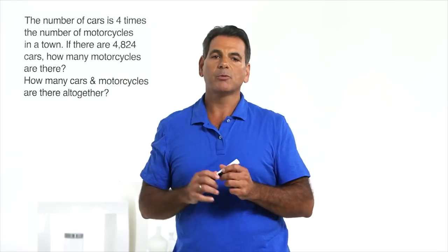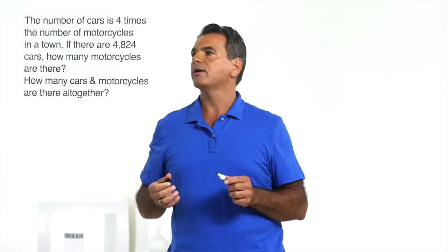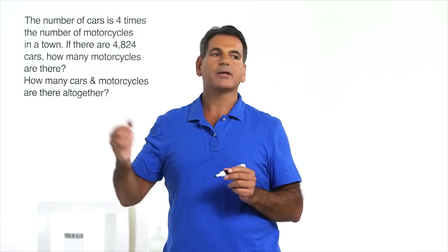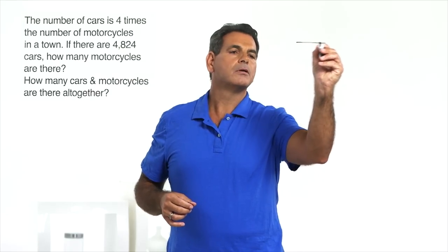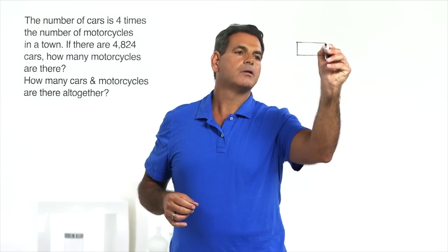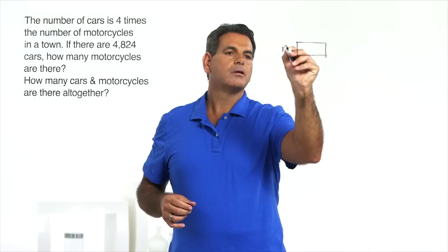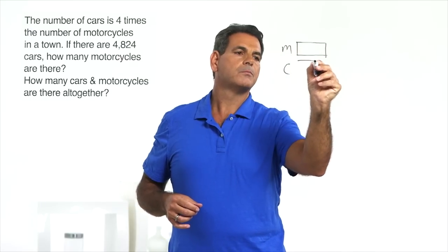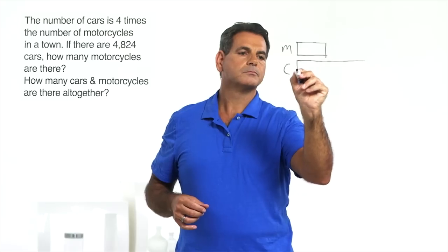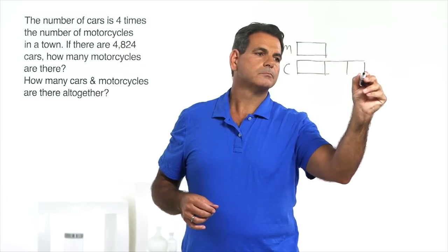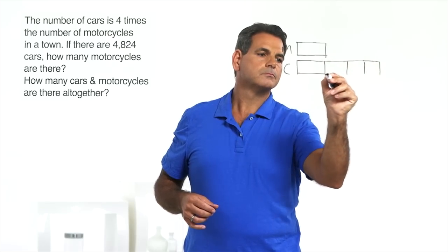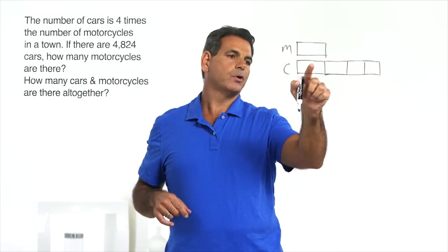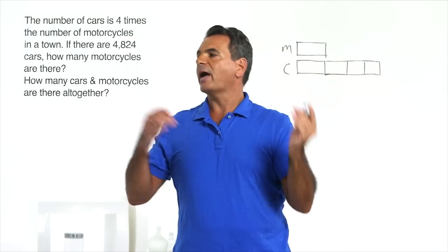So we have a two-step problem here, and we'll begin by drawing the bar model. The number of cars is 4 times the number of motorcycles. Motorcycles. Cars are 4 times the number of motorcycles. One, two, three, four.